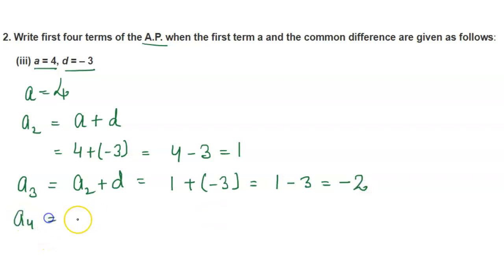Next is A₄, which equals A₃ plus D. A₃ is minus 2, plus D which is minus 3, equals minus 2 minus 3 equals minus 5.